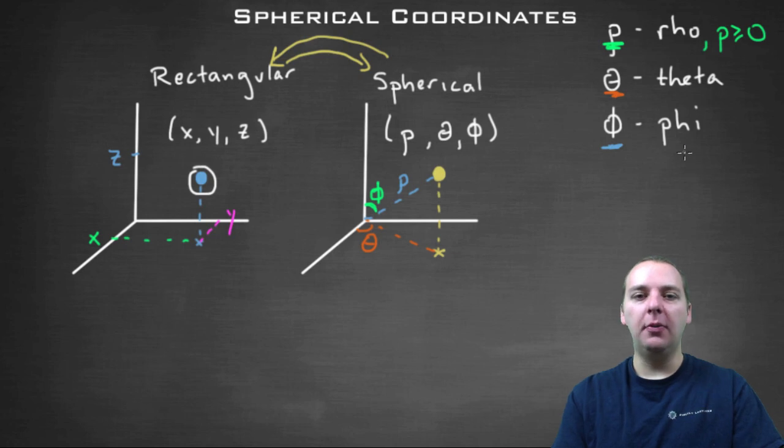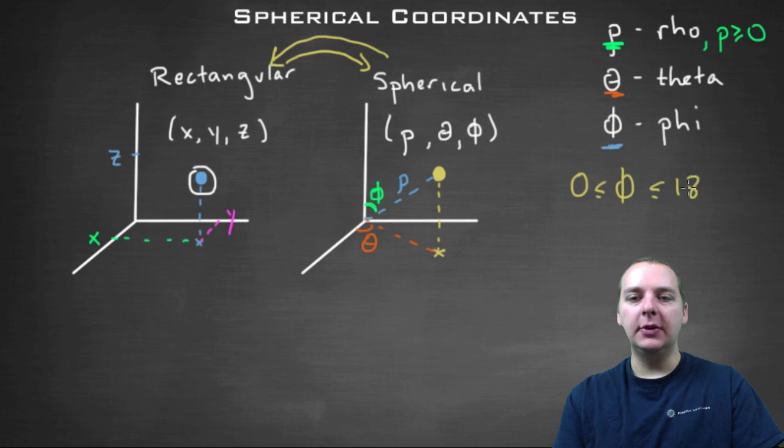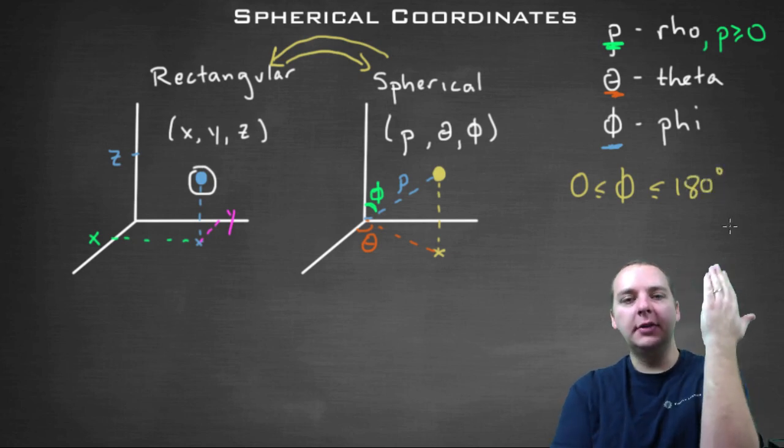One quick note about phi before I go on. I forgot to mention this. The phi angle has to be between zero and 180 degrees, and there's a good reason for that. This drop down angle obviously could start at zero if your point was on the z axis.